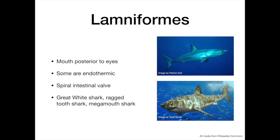The lamniforms, or mackerel sharks, are characterised by a mouth that begins posterior to the eyes and a spiral intestinal valve. Some are endothermic, meaning that they can maintain their body temperature above that of their surroundings. This order contains the fastest of the sharks, the mako, and the most well-known, the great white shark.